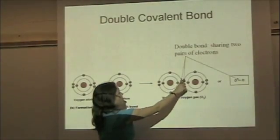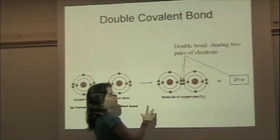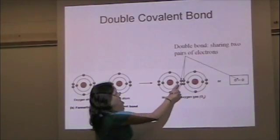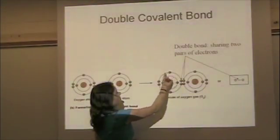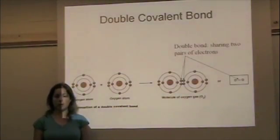These four electrons spend some time around each oxygen atom. So in reality, each oxygen has one, two, three, four, five, six, seven, eight electrons, forming a double covalent bond and making a stable molecule of oxygen.